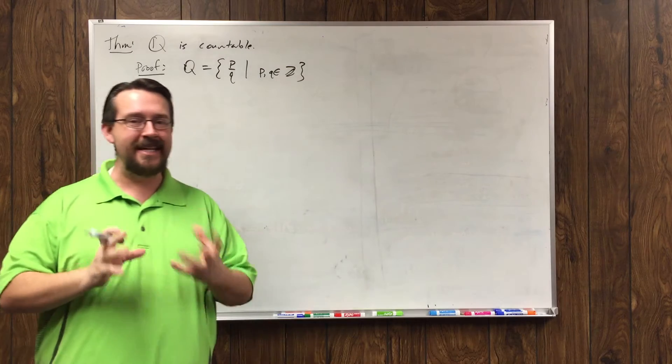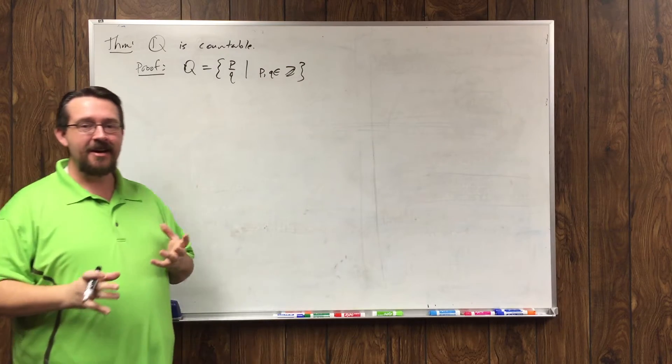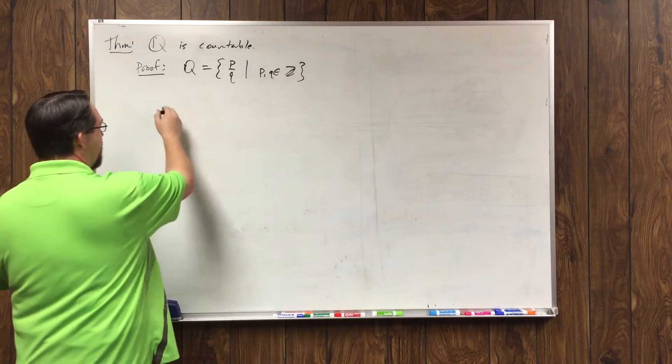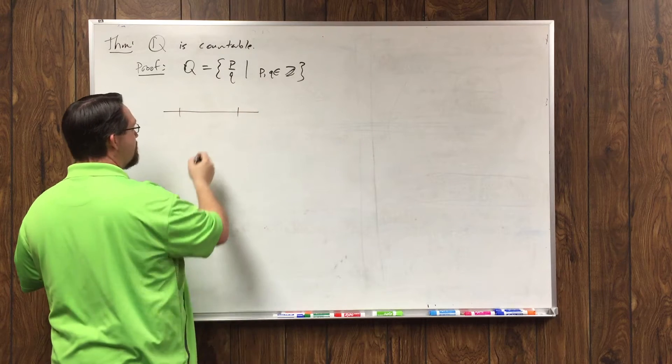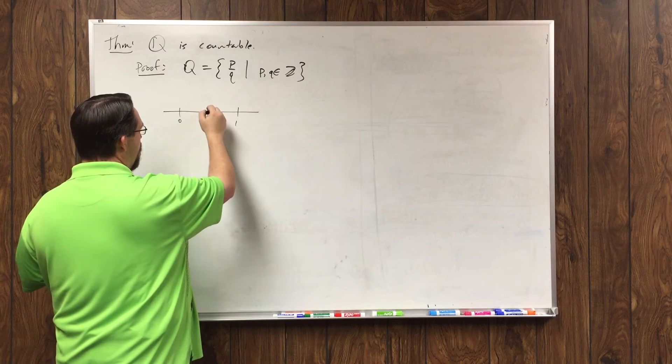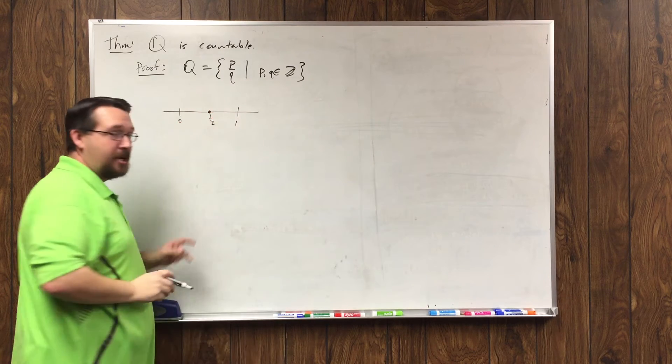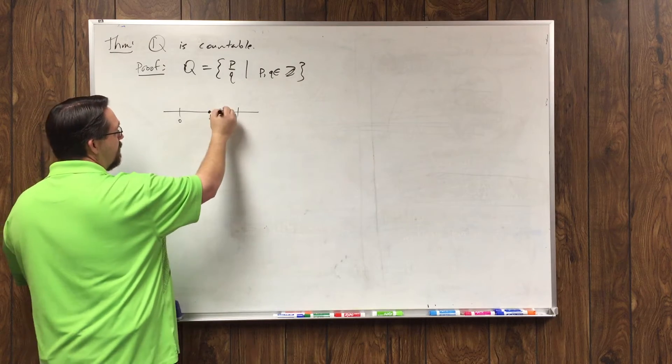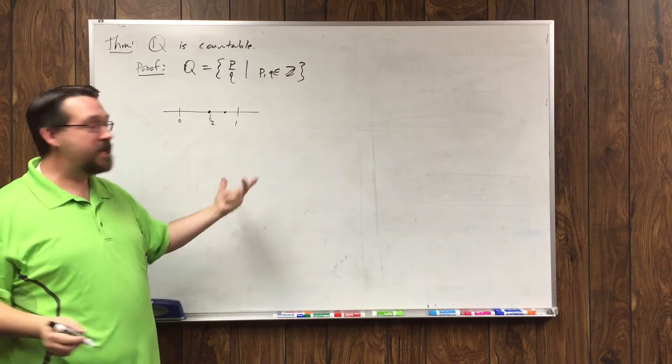Now realize this is an incredibly dense set of numbers. If I were looking at the real number line, notice that if this is zero, this is one, I know this point right here is one half. Between any two points, there's another rational number.